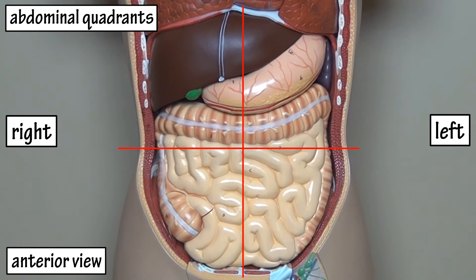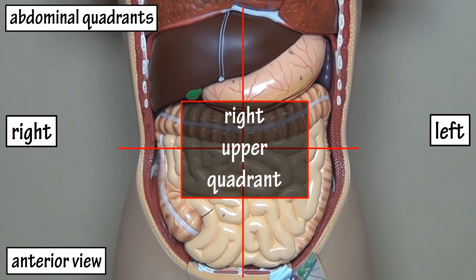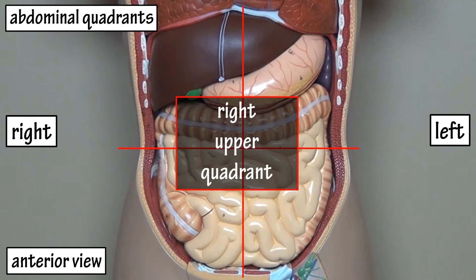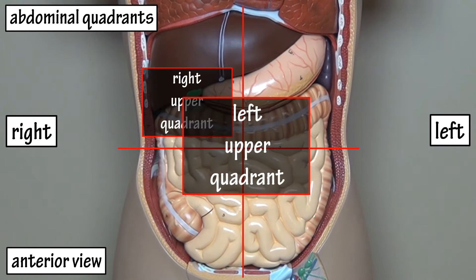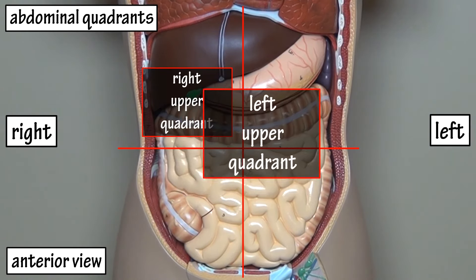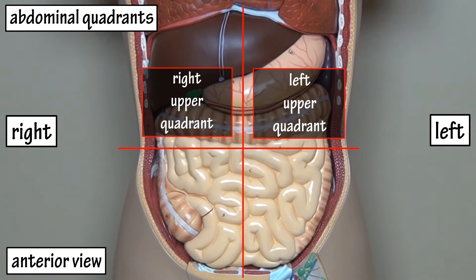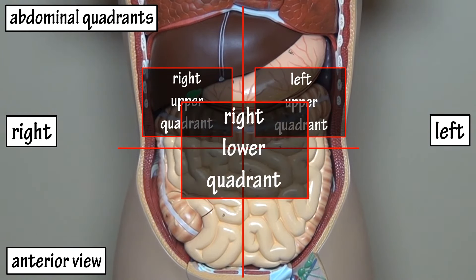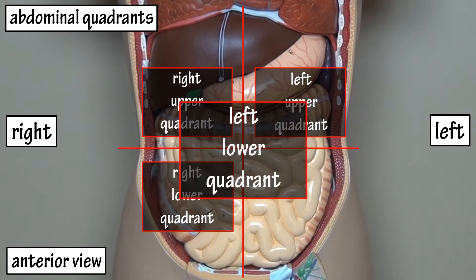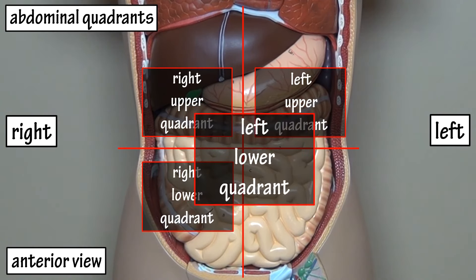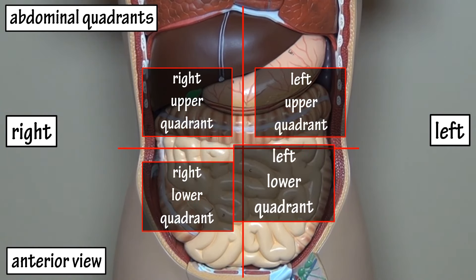These are all basic in terminology. There is the upper right quadrant, the left upper quadrant, the right lower quadrant, and the left lower quadrant. And that would be the abdominal pelvic regions and abdominal quadrants.